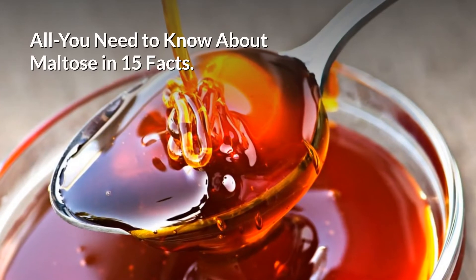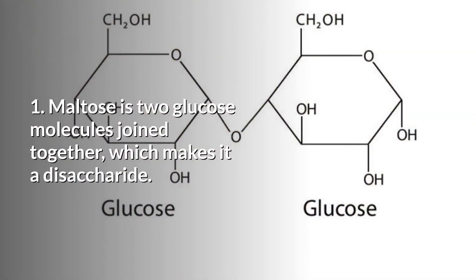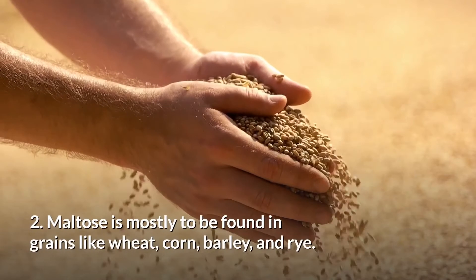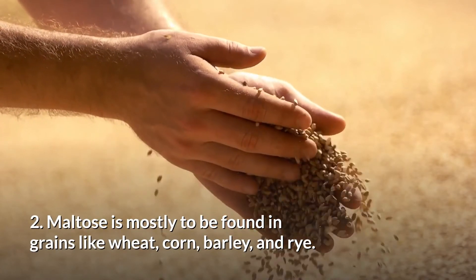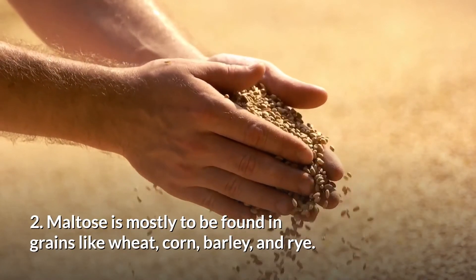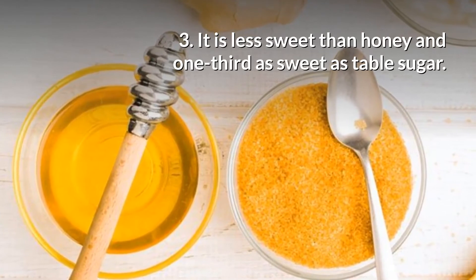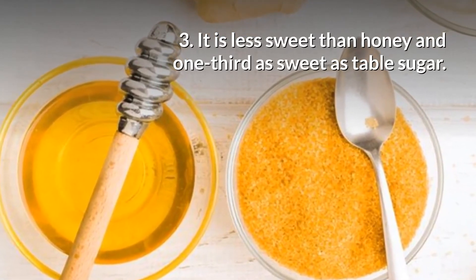All you need to know about maltose in 15 facts. Fact 1: Maltose is two glucose molecules joined together, which makes it a disaccharide. Fact 2: Maltose is mostly to be found in grains like wheat, corn, barley, and rye. Fact 3: It is less sweet than honey, and one-third as sweet as table sugar.